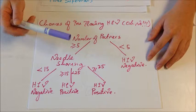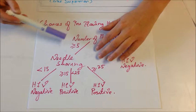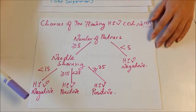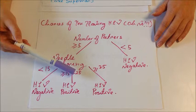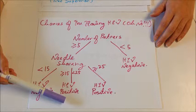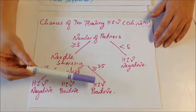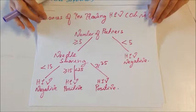Also, if you have had more than 5 partners and you have needle shared with less than 15 people, the likelihood that you are negative could be 25%. And then if you shared with 15 to 25 people, then the possibility that you are HIV positive would be 50%. But if you shared with more than 25 people, then the possibility of you being HIV positive would be 75%. So we will go over another example of this to make it a little bit more clear.